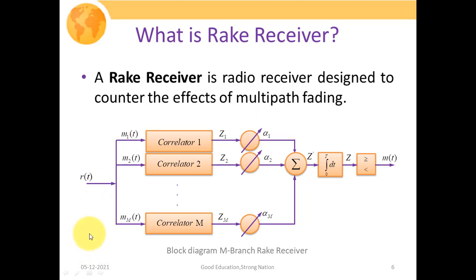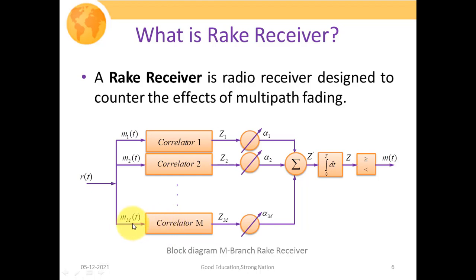Since the rake receiver is employed in CDMA systems, R(T) is the CDMA received signal at the receiver. Since signals are coming from multiple paths, M1(T), M2(T) up to M_M(T) represent different multipath components. These are passed to corresponding correlators, each tuned to the peak associated with that multipath component. The first multipath component arrives at tau 1, the second at tau 2, and so on up to the M-th component at tau M.